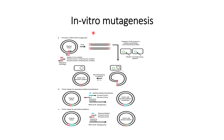In this video we will discuss in vitro mutagenesis. The method we will discuss takes advantage of bacteria that contain recombineering proteins. These recombineering proteins help in combining vectors. Some examples of recombineering proteins are Red ET proteins.